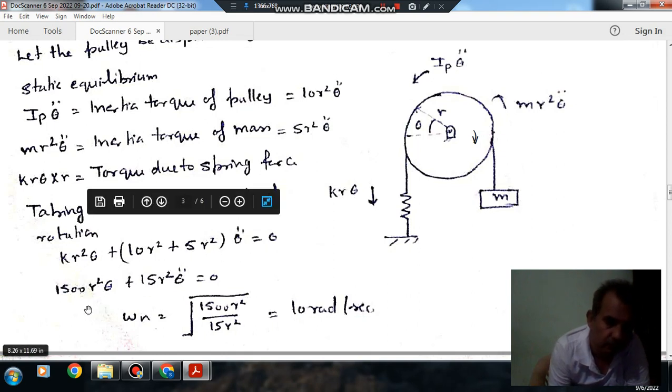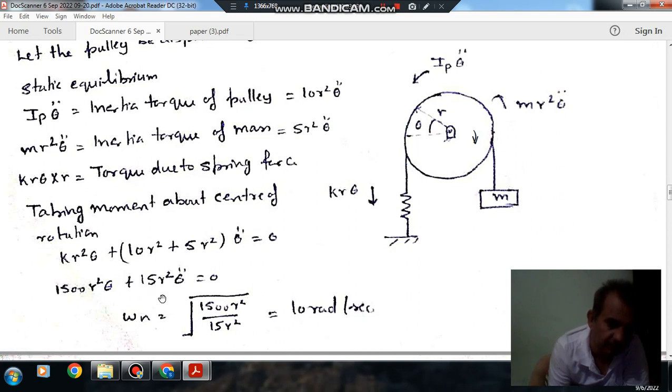So here putting the value of K, that is 1500, it will be 1500R square theta plus 15R square theta double dot. So natural frequency will be coefficient of theta divided by coefficient of theta double dot.